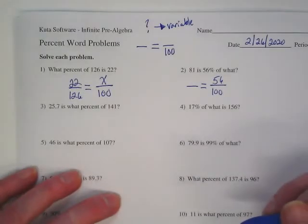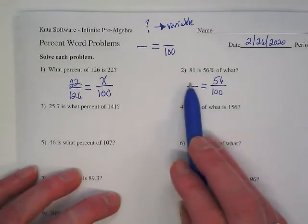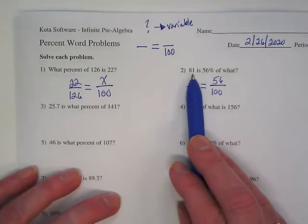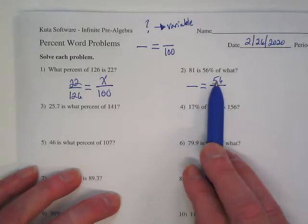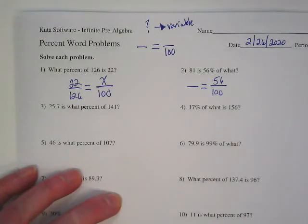My habit is to put the percent as the second ratio, but it really doesn't matter. You could set it up as the first ratio. 81. Read the way the question is worded. Does it go with the 56 or does it go with the 100? It goes with the 56.